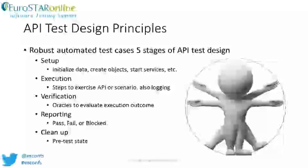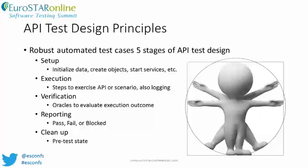Regardless of your testing approach, API testing requires us to design and develop a set of automated test cases. Automated API tests generally follow a five-stage design pattern. Also remember that API tests should be atomic operations that can be executed independently or in any order. The first step is the setup step, which involves calling common methods or functions to perform tasks such as initializing data, creating objects, starting services, or setting machine states. Setup is about putting the system into a known machine state required for the test to execute.